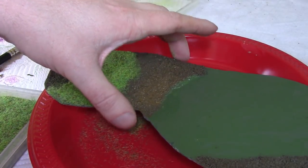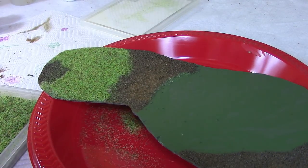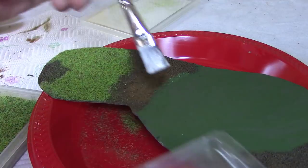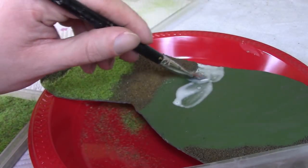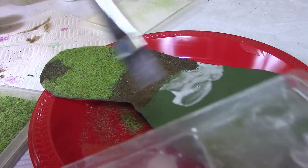I like this flock that GW makes. It has enough little brown and red bits in it to add some variety so it's not just pure green. Now let's use the same method on the other side. Just tons of glue and then we pour on a bunch of flock.